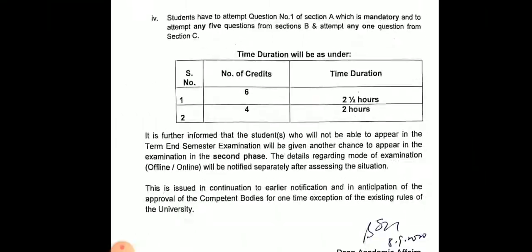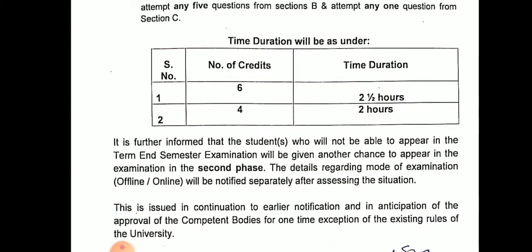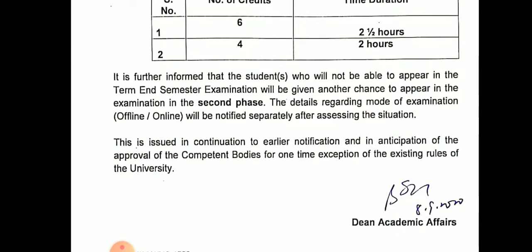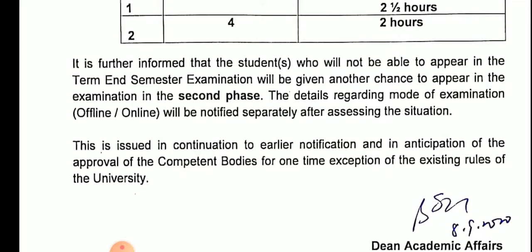To summarize: one question from Section A, any five questions from Section B, and any one question from Section C. For students who are not able to appear in the term and semester exam, they shall be given another chance. This is a very good opportunity for students studying in Cluster University. For the second phase, the detail regarding mode of examination — offline or online — shall be notified separately after assessing the situation.